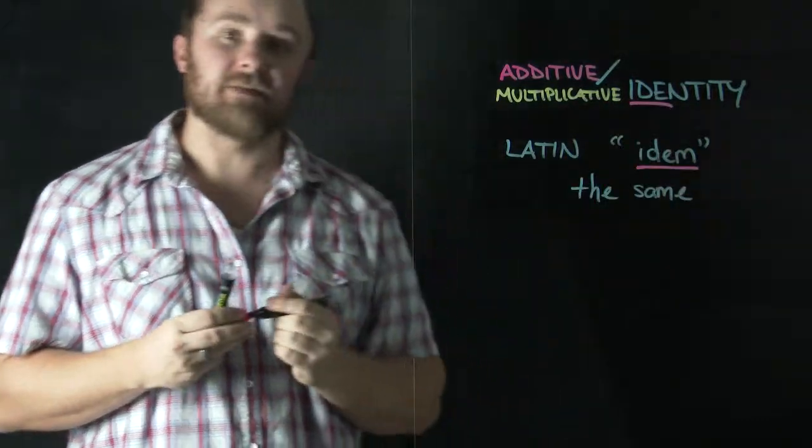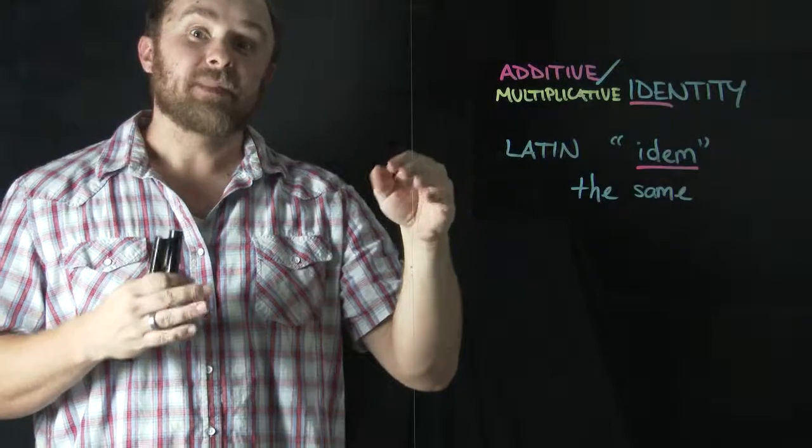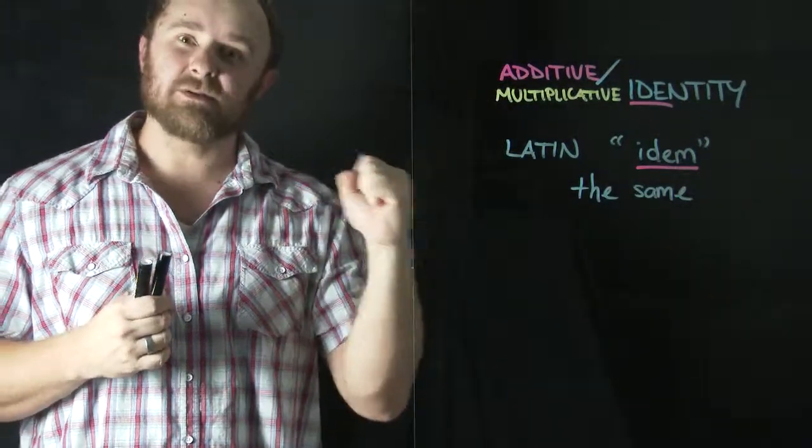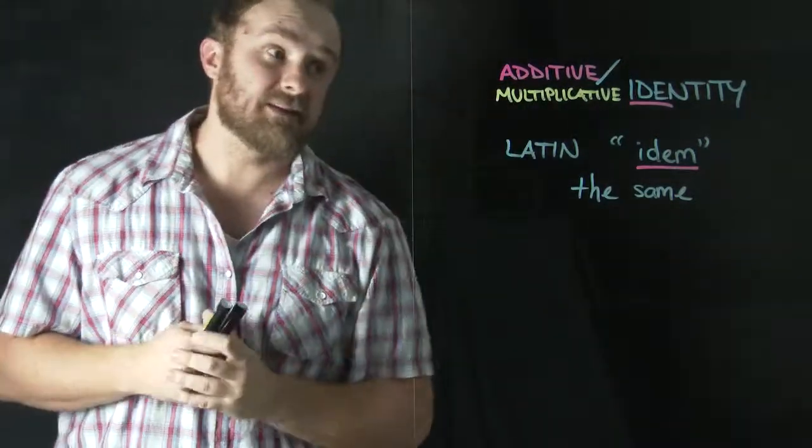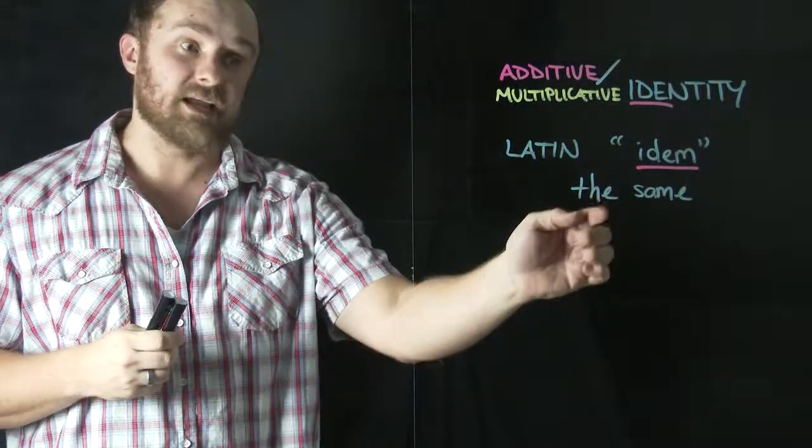So again, we can see that root there. Idem means the same. So the additive identity is what can we do to numbers when we add them that makes those numbers stay the same. And the multiplicative identity is asking us what can we do to numbers when we multiply them to make those numbers stay the same.